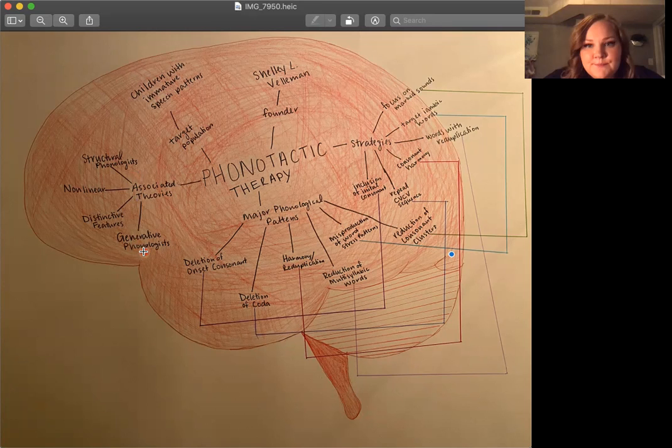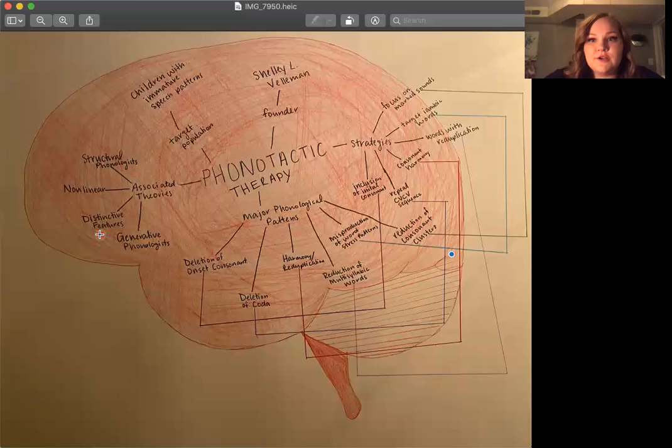Next was the generative phonologists who emphasized the role of allophones, phonemes, and phonemic distinctive features. That brings us to the distinctive feature theory, which involves the idea that speech sounds contrast because of their features, like voicing, place, and manner. That's how you can tell speech sounds apart, because they have these distinctive features.